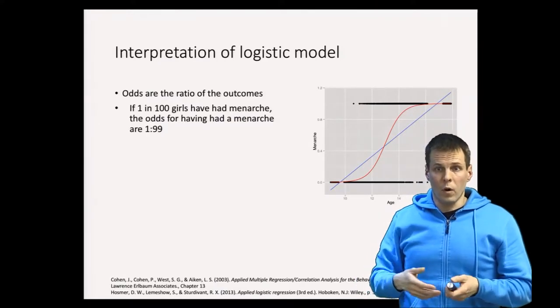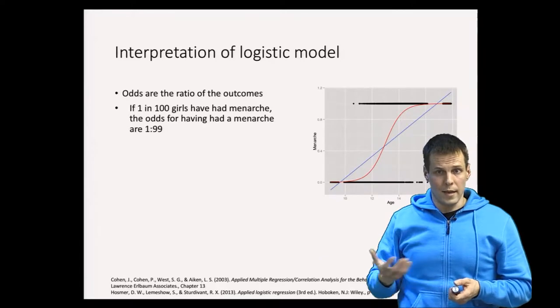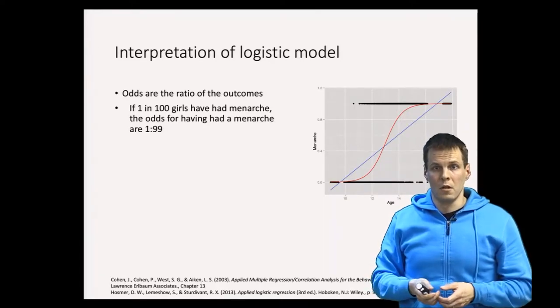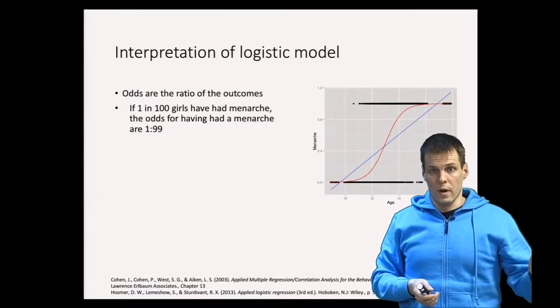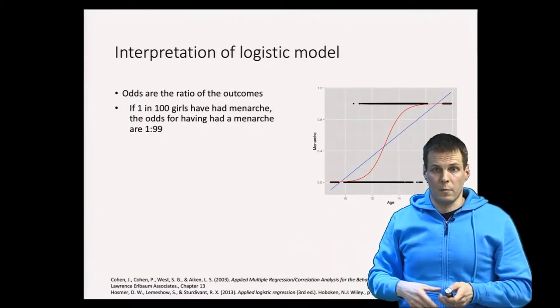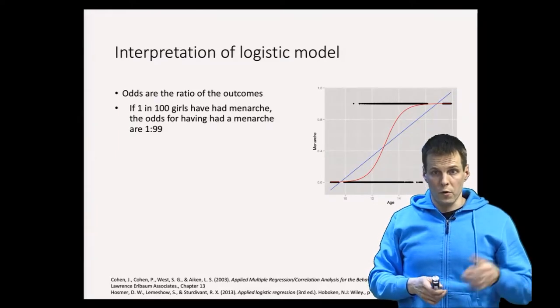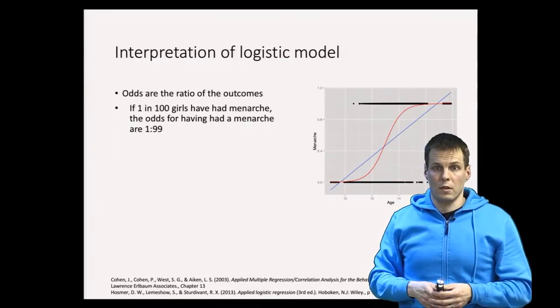You can think of one common use of odds is in gambling. So if you have two soccer teams, one has won two matches in the past, another one has won five matches in the past, then you say that based on that data, the odds for the first team winning is two to five. So that's the idea of odds.